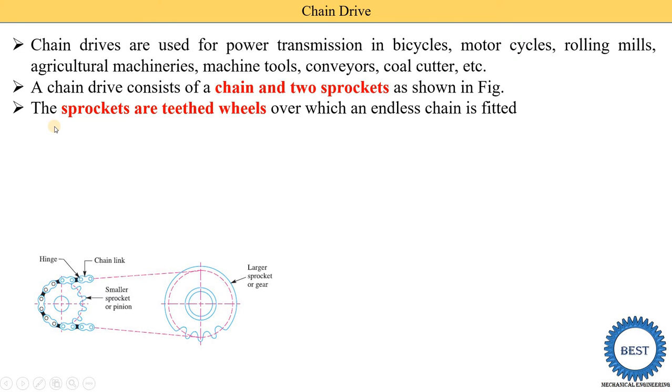The sprockets are teethed wheels over which endless chain is fitted. This sprocket has teeth. This is called the teethed sprocket. On this sprocket, the endless chain is fitted and the chain is rotated on this sprocket.